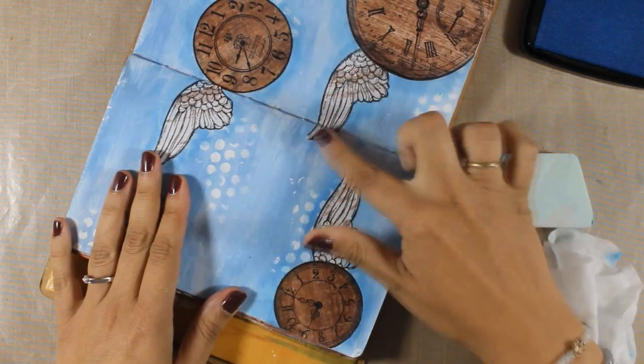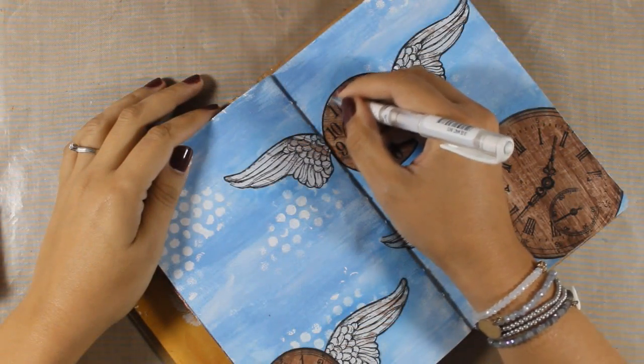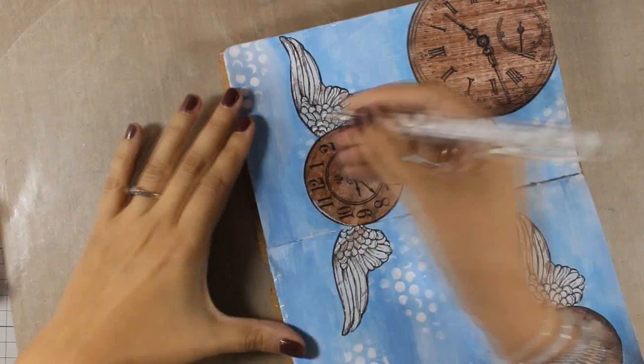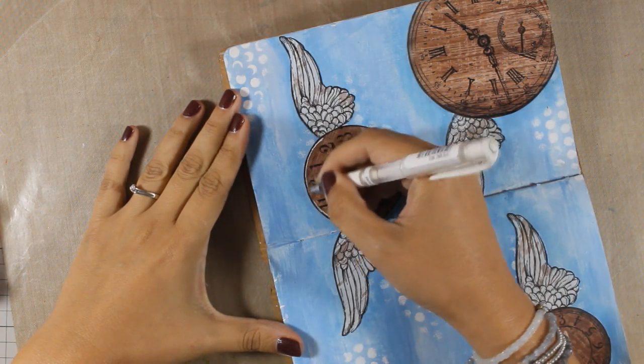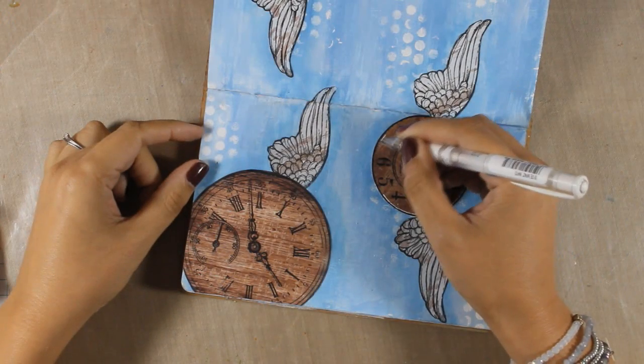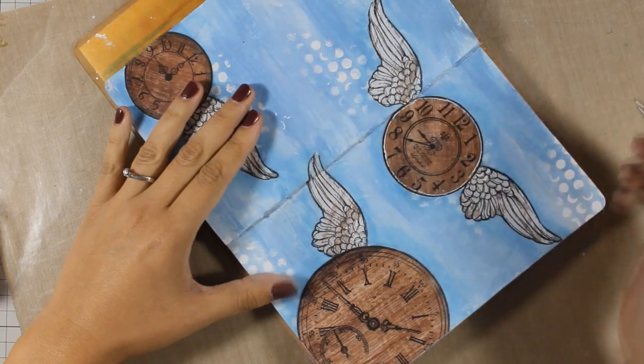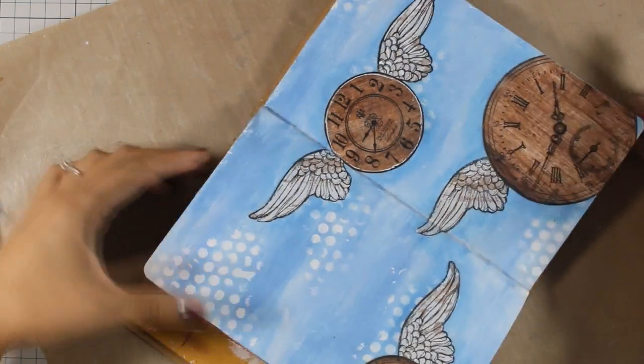To help the clocks pop even more against the background I am using my white gel pen and I'm going all around those three clocks on the edges. Notice that I'm not being very neat as I don't want to have the perfect outline of the clocks. I rather sketch the lines.